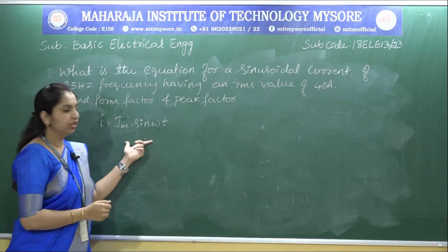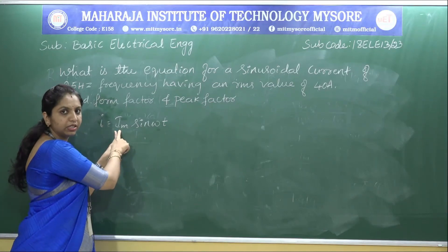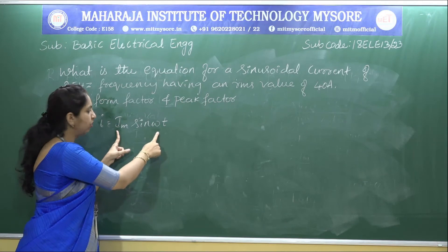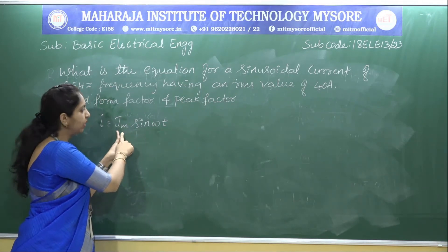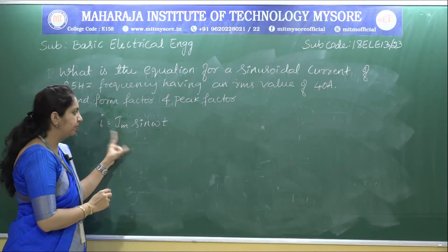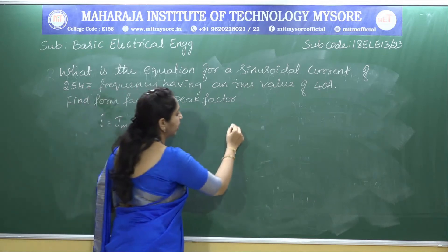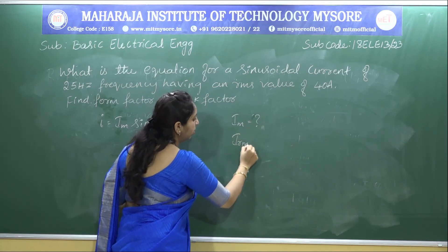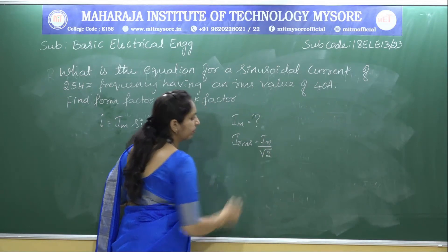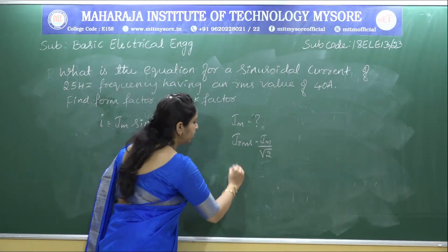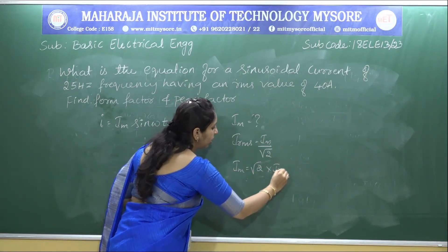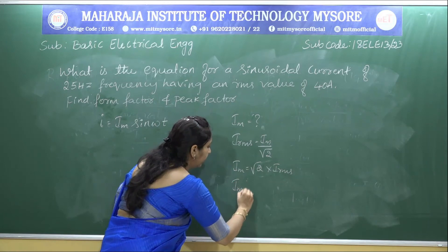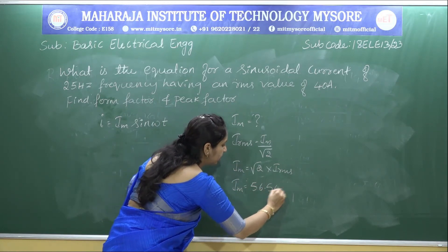To calculate I_M, we use I_RMS = I_M/√2, so I_M = √2 × I_RMS. Substituting I_RMS = 40 amperes, we get I_M = √2 × 40 = 56.56 amperes.